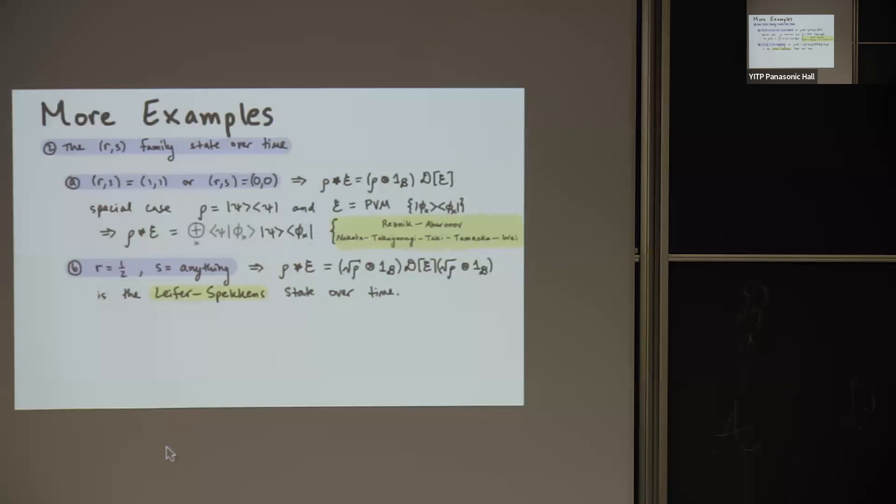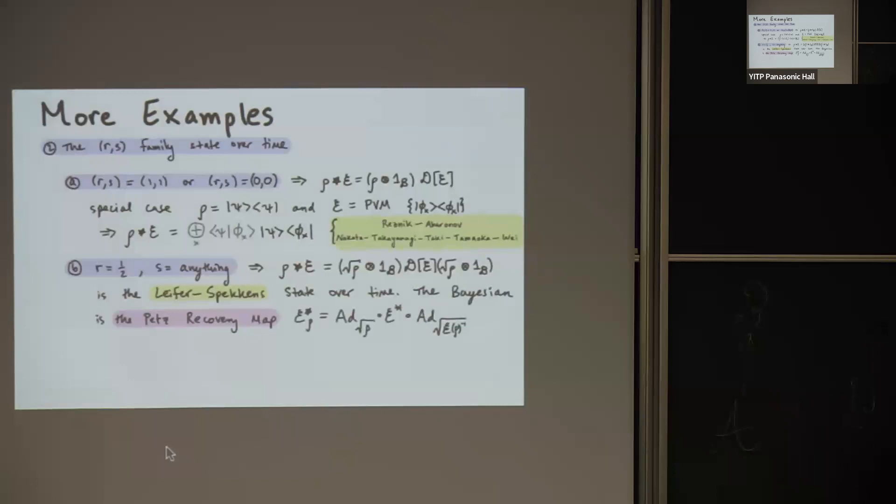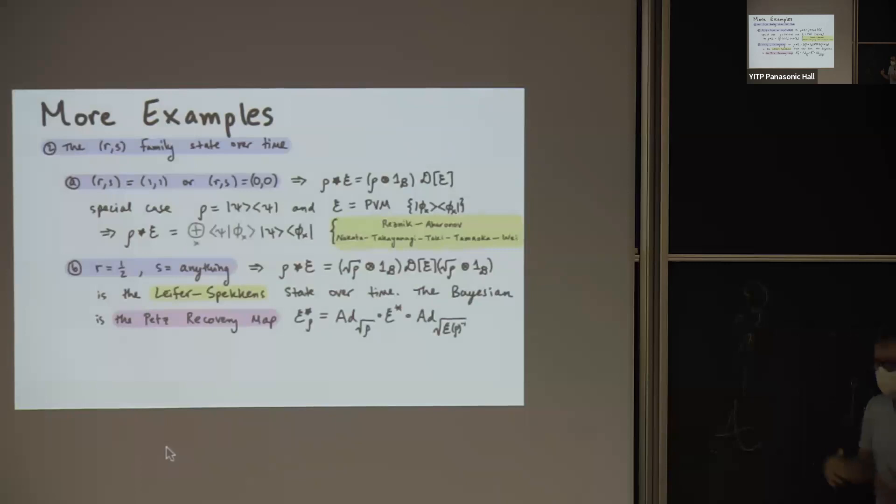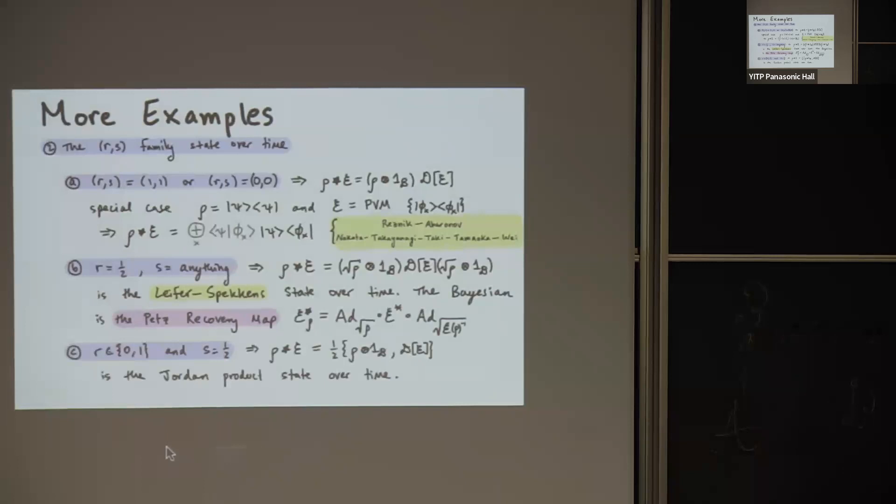Now, if we take another part in this whole family, and we choose R equals a half, and S is anything, something also interesting happens. We get this nice symmetric product where we take our density matrix, take its square root, put it on both sides of the channel state, and this actually reproduces what's called the Liefer-Speckens state over time. And Liefer-Speckens spent an entire paper devoted to the question that I was motivated by to answer in the first place, and they proposed this as their version of a state over time. But I'm just illustrating that this is just one of many large class of possibilities. Interestingly, when you compute the Bayesian inverse of this state over time, you recover the PETS recovery map. And this PETS recovery map is sort of ubiquitous in quantum information, quantum thermodynamics, and more recently in the context of the black hole information paradox and entanglement wedge reconstruction.